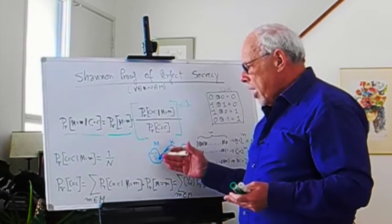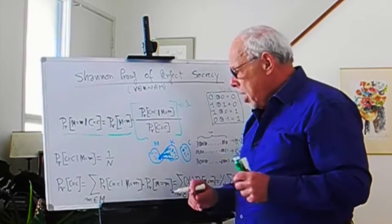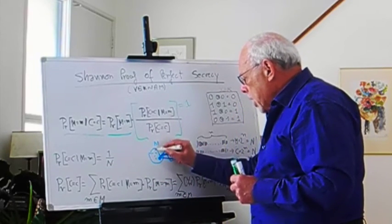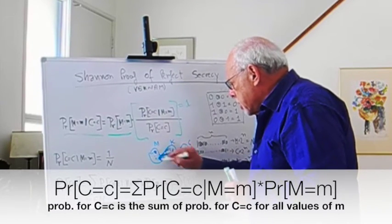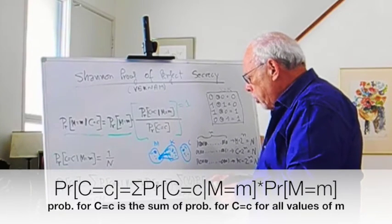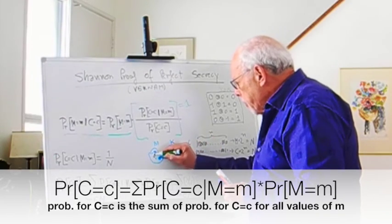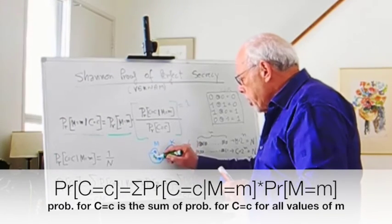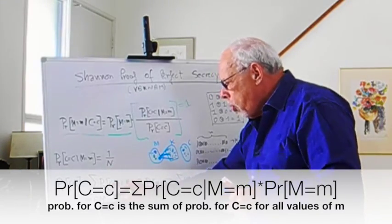That will give us the chance for the ciphertext to be c, because we add the probability for this to be c given this is the message, then we add the probability for the ciphertext to be the same c given this is the message, and then this is the message. We add those expressions over the entire message space.